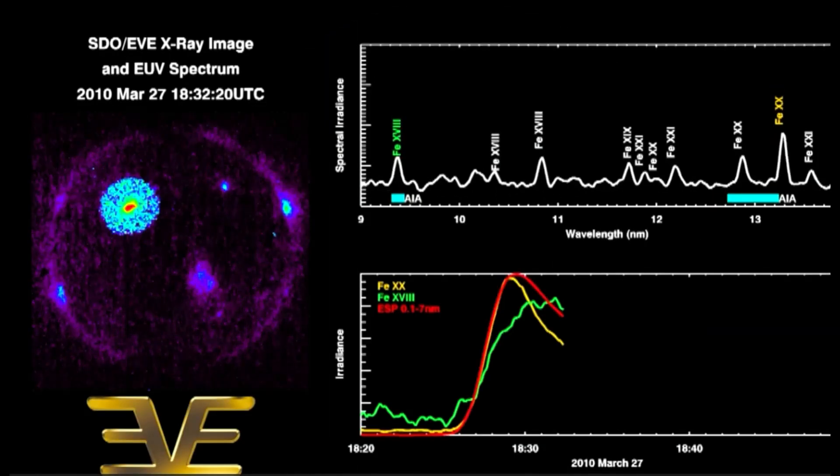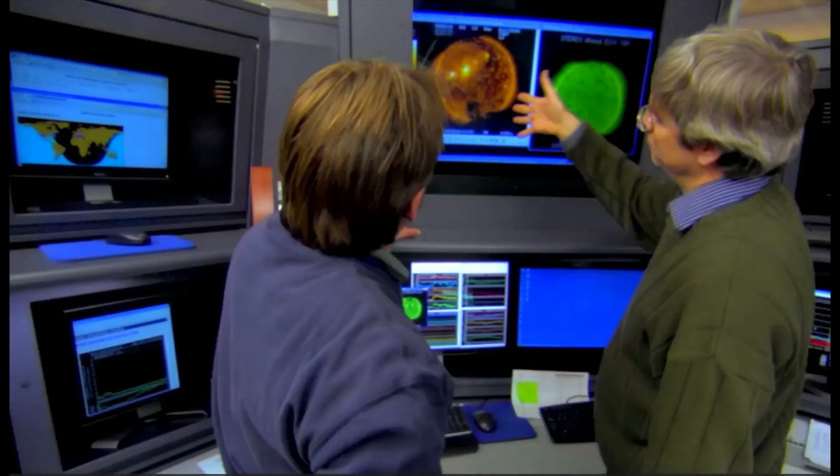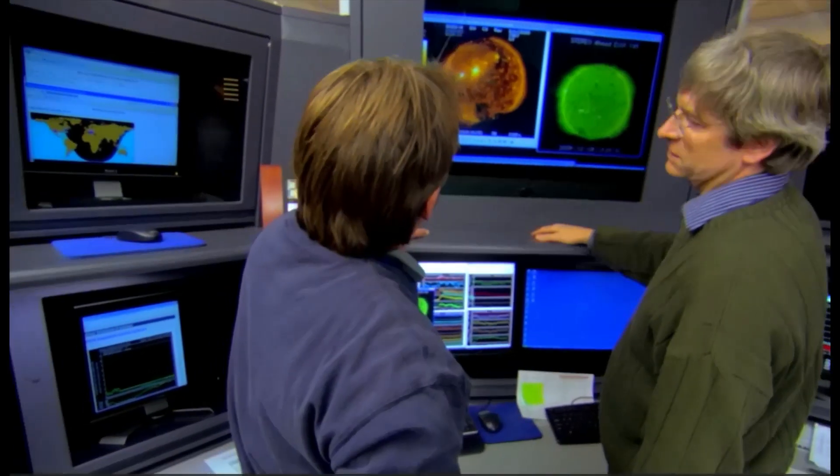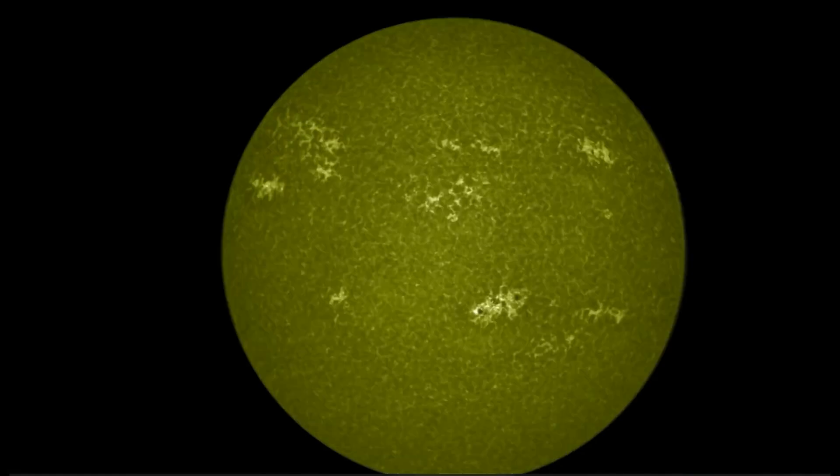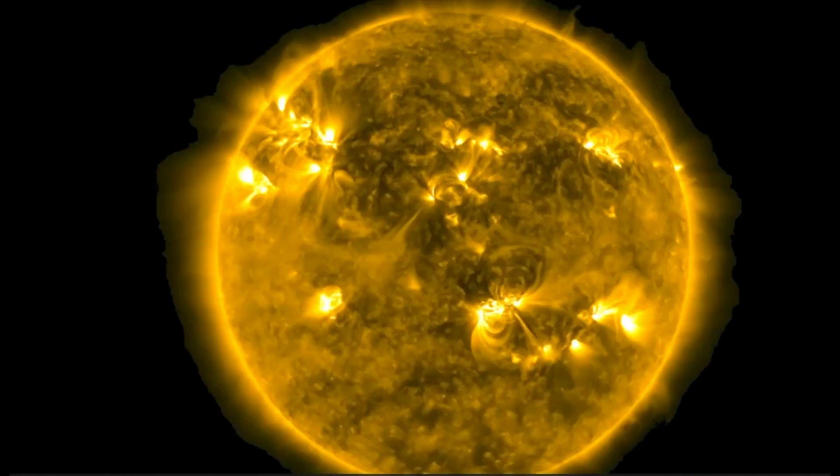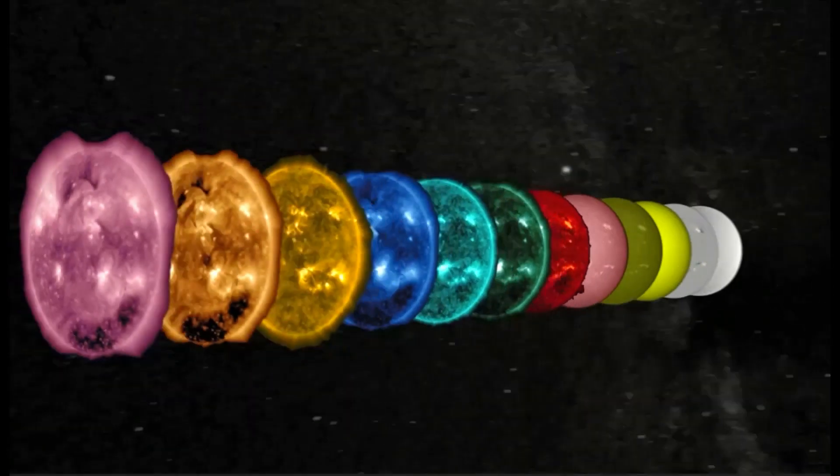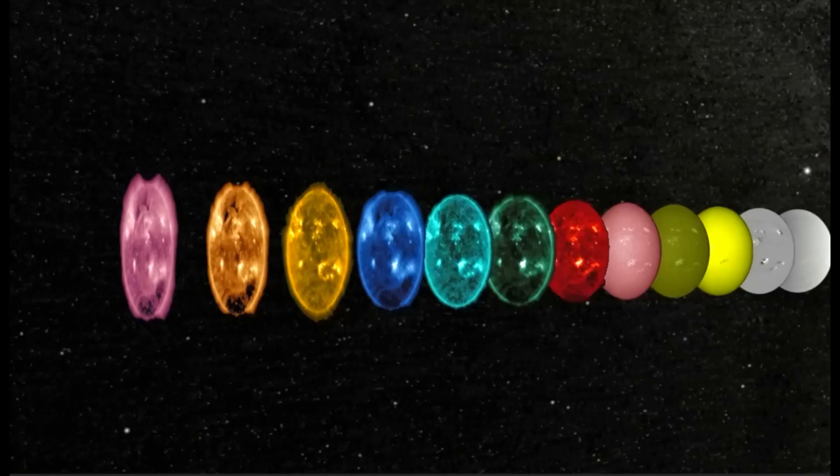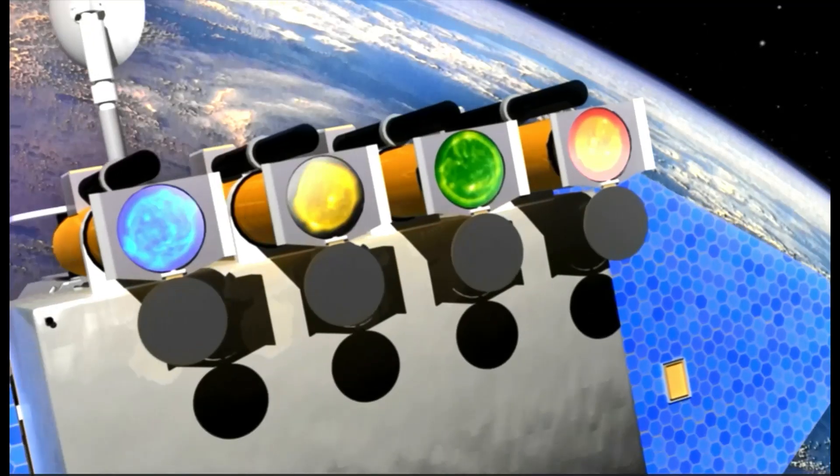The seriousness of an X-class flare pointed at Earth is why NASA and NOAA constantly monitor the Sun. NASA's heliophysics fleet of spacecraft can now see the Sun from every side and in many different wavelengths. This unprecedented coverage is enabling scientists to predict and detect space weather events like flares and CMEs with ever greater accuracy.